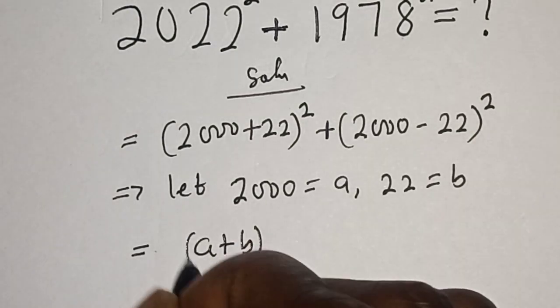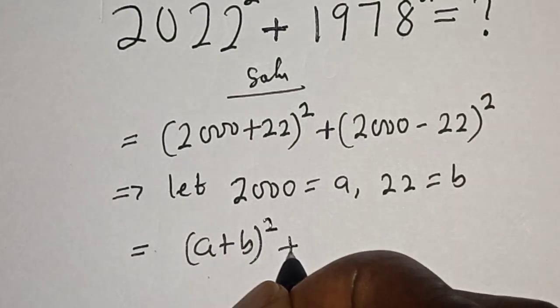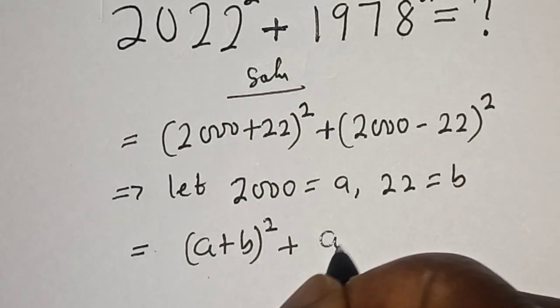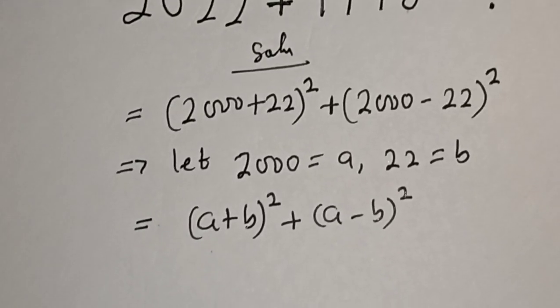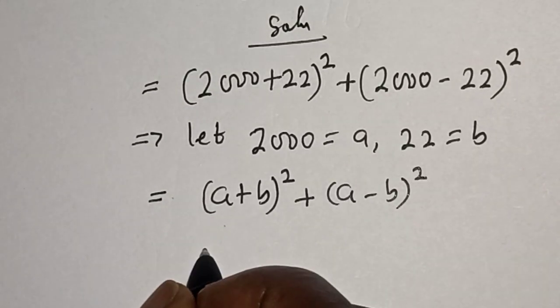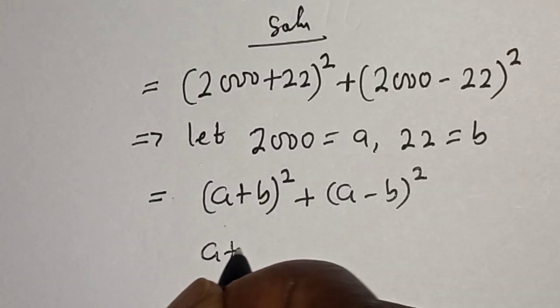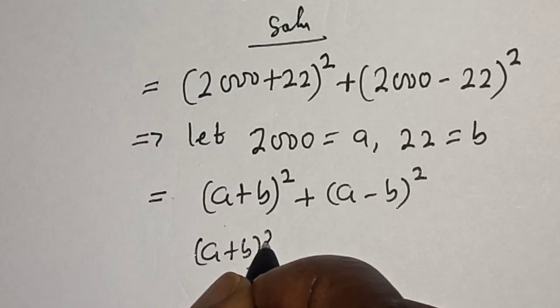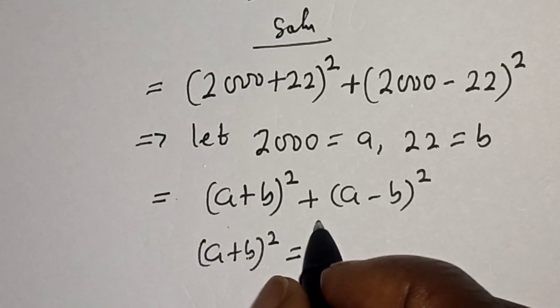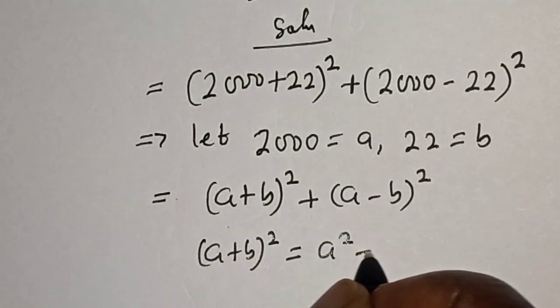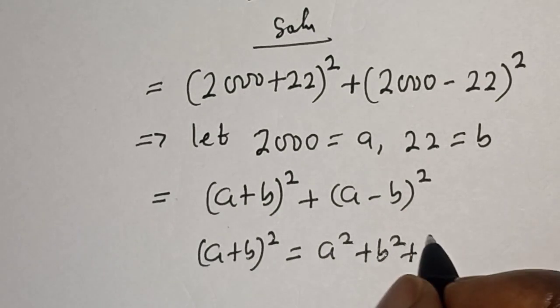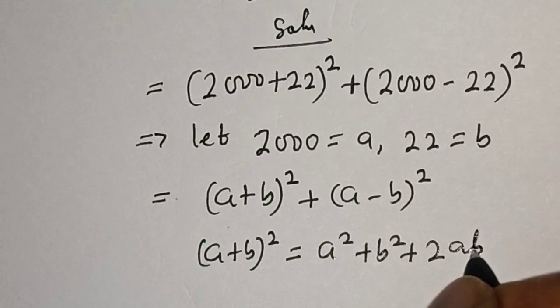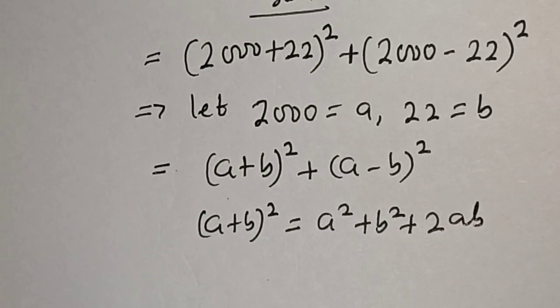Plus (a - b)². Now take note of this: if you have (a + b)², this is equal to a² + b² + 2ab. And (a - b)² is a² + b² - 2ab.